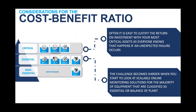When looking at cost-benefit ratio, with critical assets it's easy to justify ROI - most people can point to that critical piece of equipment. It makes for a great pilot project because everyone knows that asset by its tag name. For essential assets it becomes more difficult because we're looking at the majority of pieces of equipment and the impact on production and quality might not be as high - so the asset criticality really warrants the solution you're trying to get to.